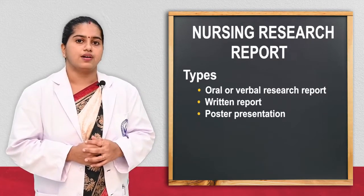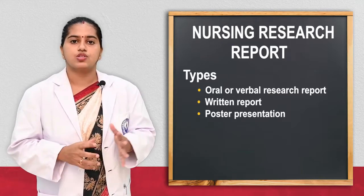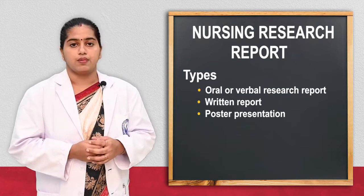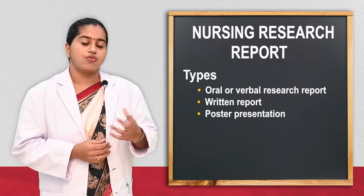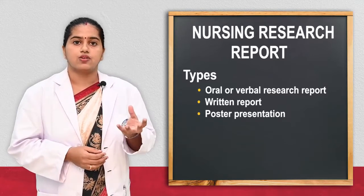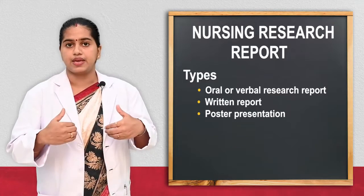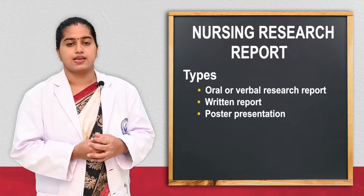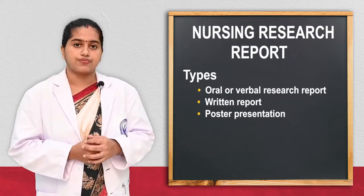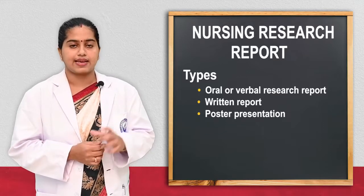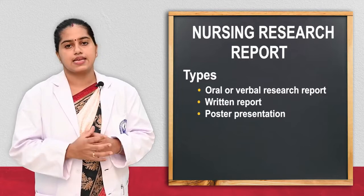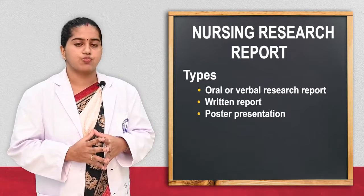Next we will see what are the types of research reports. First one is the verbal report — when the researcher completes the research, they can give a report presentation at a formal or informal meeting, formal ones like workshops and conferences. There they can go with a presentation using PPT for about 20 to 30 minutes, and the findings can be communicated or disseminated to other nursing professionals. Second one is the written type — they can have a technical report or a popular report. In nursing, we can publish articles in journals, send abstracts to journals, or prepare comprehensive drafts like thesis, dissertation books.